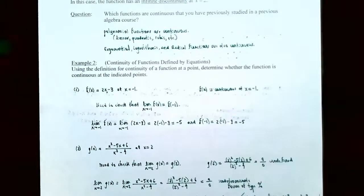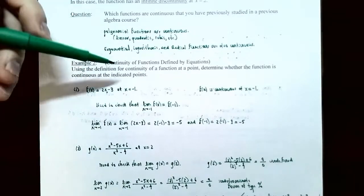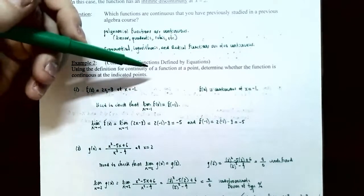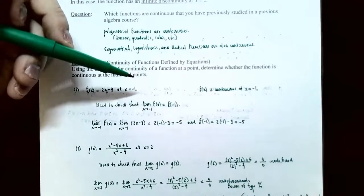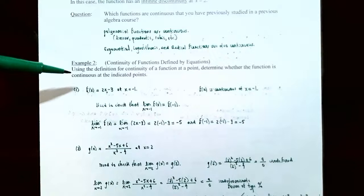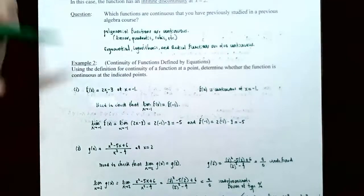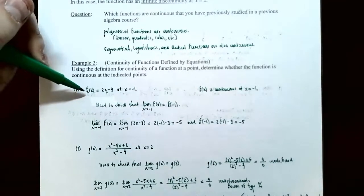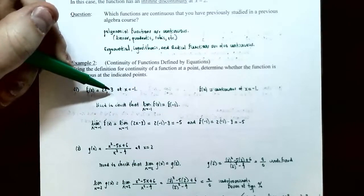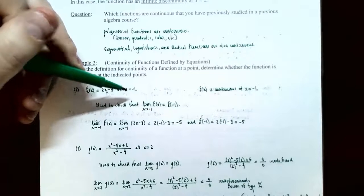Example two: continuity of functions defined by equations. Using the definition of continuity at a point, we'll determine whether the function is continuous at the indicated points. Number one: the function f of x equals two x minus three. Is this function continuous at x equals negative one?